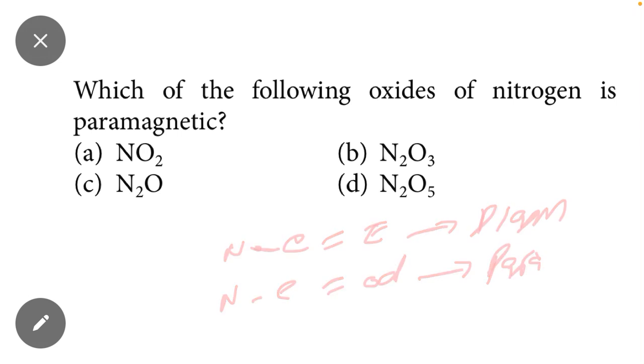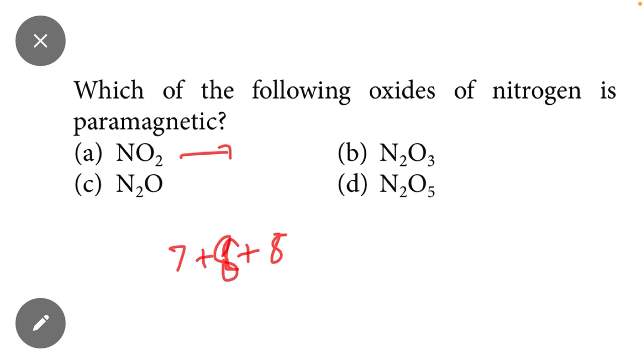If we calculate the number of electrons for the first element, nitrogen has seven electrons and one oxygen has eight electrons. There are two oxygens, which means both have 16 electrons. If we add 16 plus 7, it means total 23 electrons.